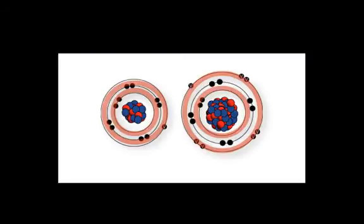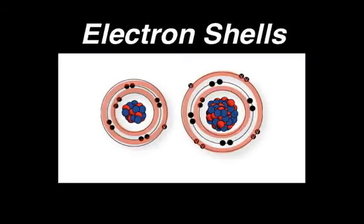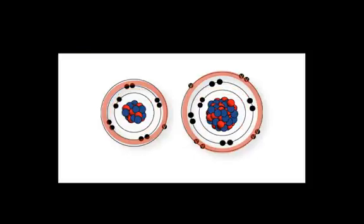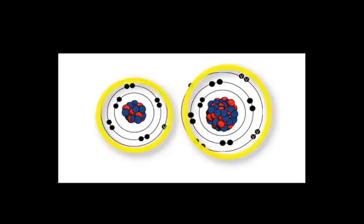The electrons occupy specific energy levels called electron shells. Electrons in the shell closest to the nucleus have less energy than those in shells further from the nucleus.